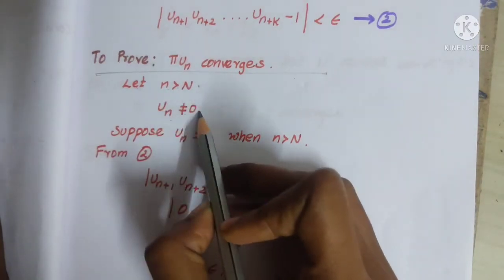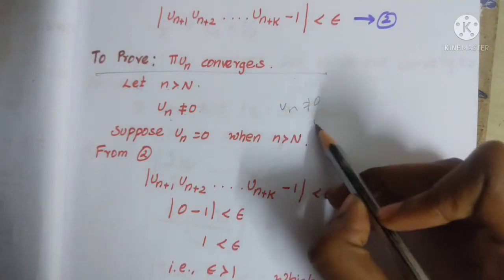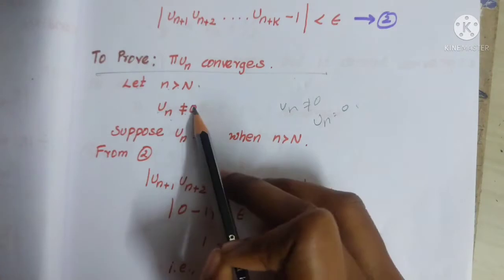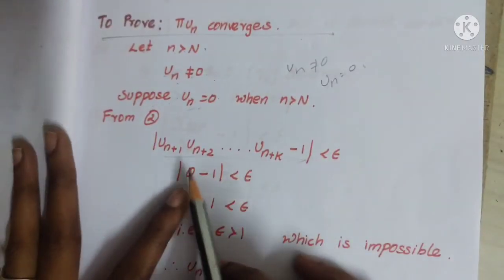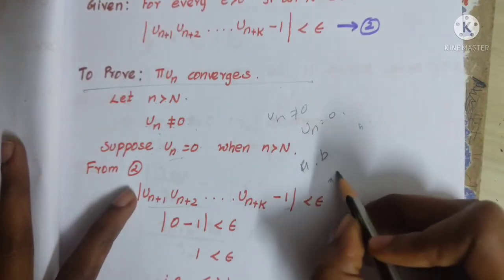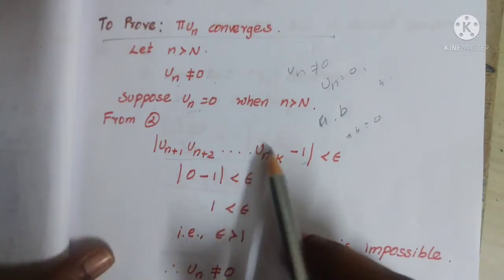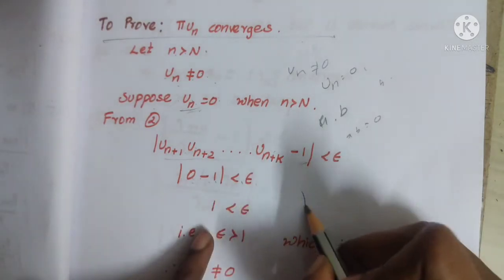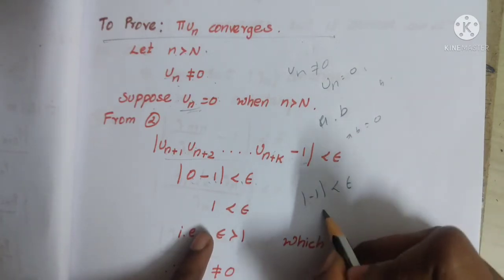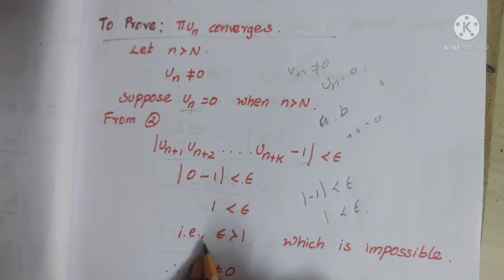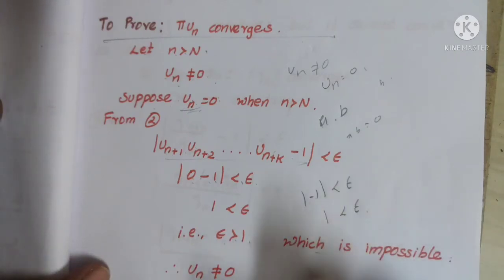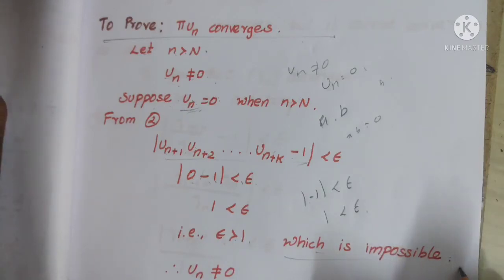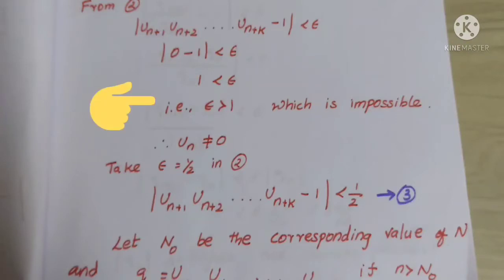For n greater than N, Un is not equal to 0. Suppose Un equals 0 — then the entire product would be 0. We have U(n+1) · U(n+2) · ... · U(n+k) minus 1 equal to 0, giving minus 1 equal to 0, which is impossible since epsilon is an arbitrary constant greater than 0. Taking epsilon equal to 0.5 — that leads to a contradiction, which is impossible.